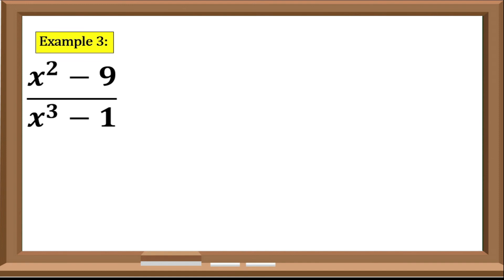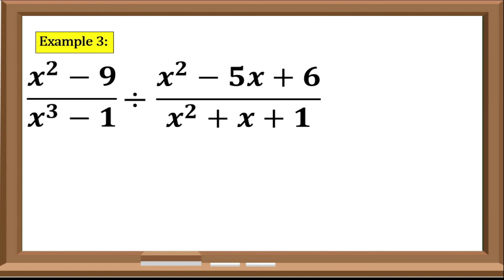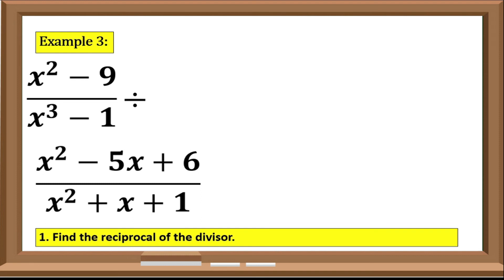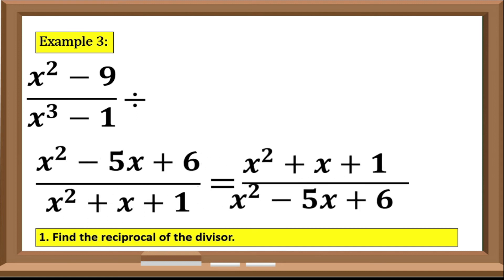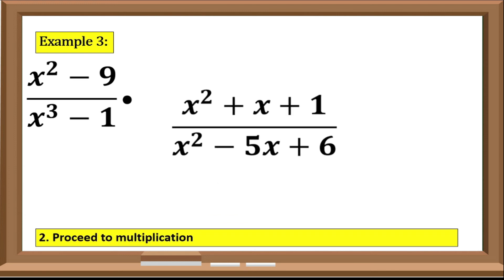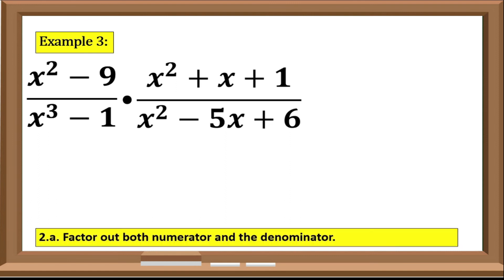Now let us try the last example, number 3: (x² - 9) over (x³ - 1), divided by (x² - 5x + 6) over (x² + x + 1). Step 1: find the reciprocal of the divisor. Our divisor is (x² - 5x + 6) over (x² + x + 1), so its reciprocal is (x² + x + 1) over (x² - 5x + 6).